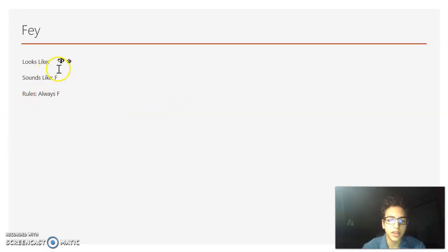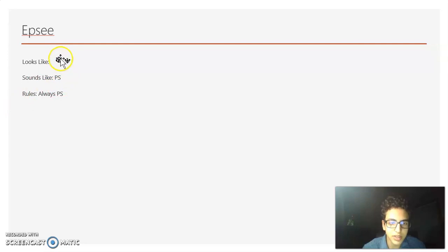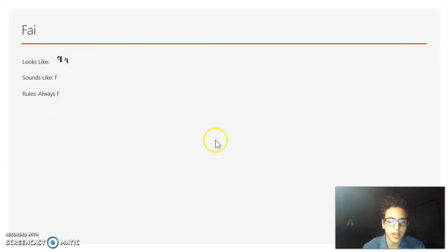Now we have Fae, and it sounds like an F. Then we have Epsi — it's different from Fae. Fae has the circle going around and then stops, while Epsi has a U shape. Epsi sounds like PS together — like 'psss.' And then Fae, which looks like a backwards P but the top is not connected, always sounds like an F, just like the other Fae.